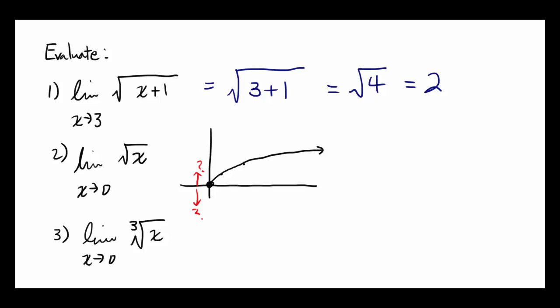when you're talking about limit, you've got to think about what's happening from the right and from the left of, in this case, 0. From the right, it does seem like the value, the f of 0, is going to be 0. From the right, it seems like the limit is 0.